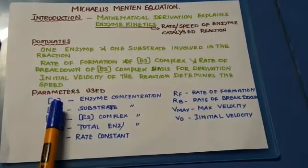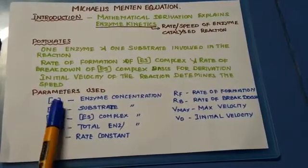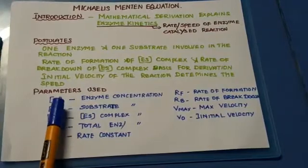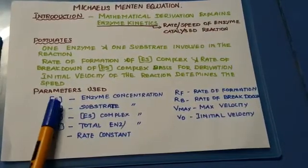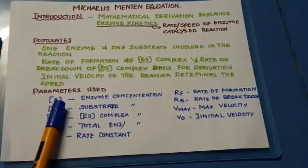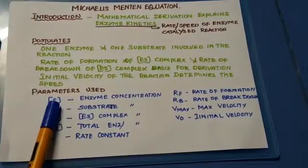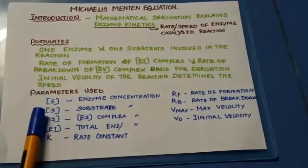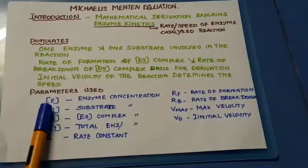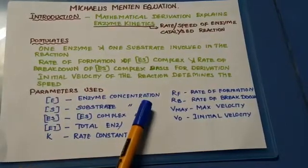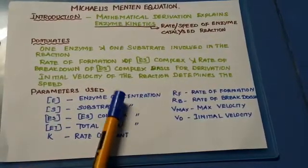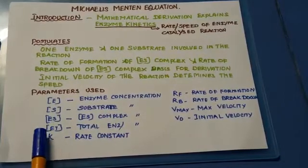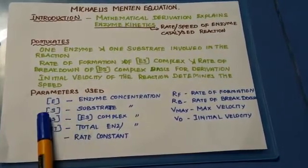Always you have to write the square bracket. Square bracket represents concentration. If you are writing E alone, then it represents enzyme. When it is represented with a square bracket, then it represents enzyme concentration. So throughout the derivation, you have to follow this square bracket notation.